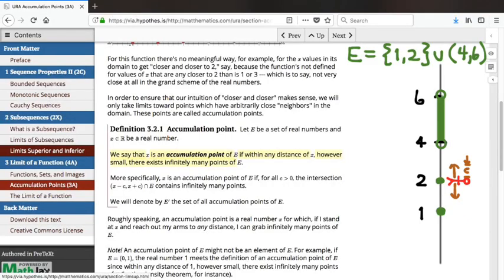So to finish this thought, we might ask ourselves, all right, so 2 wasn't an accumulation point, 5 was an accumulation point. What are all of the possible accumulation points for this set?